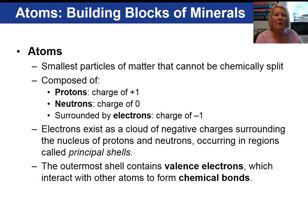The outermost shell of electrons are referred to as valence electrons. And their significance is that these are the electrons that form chemical bonds.